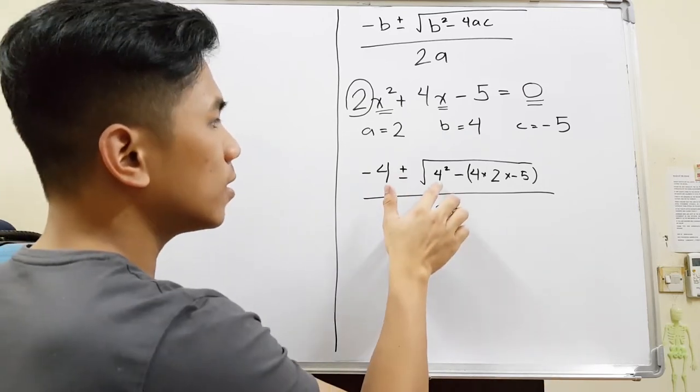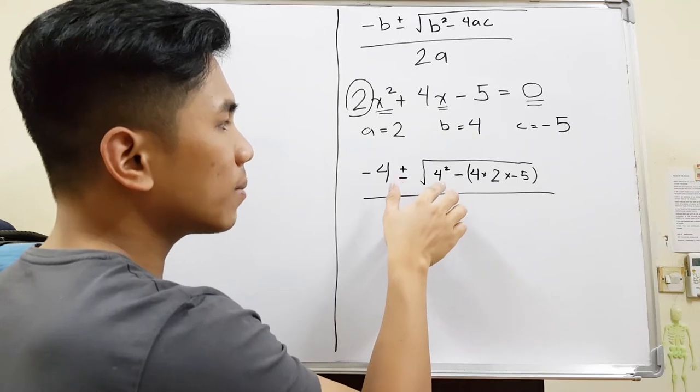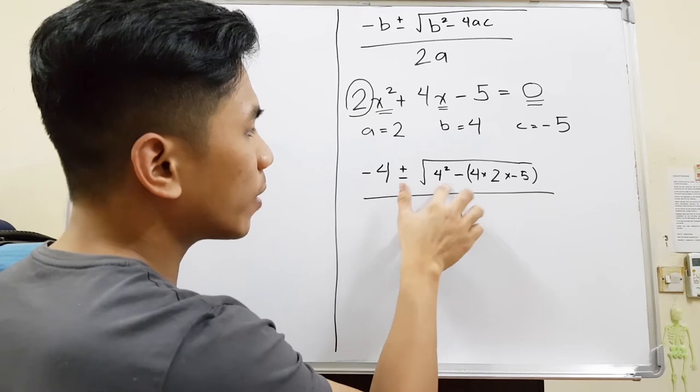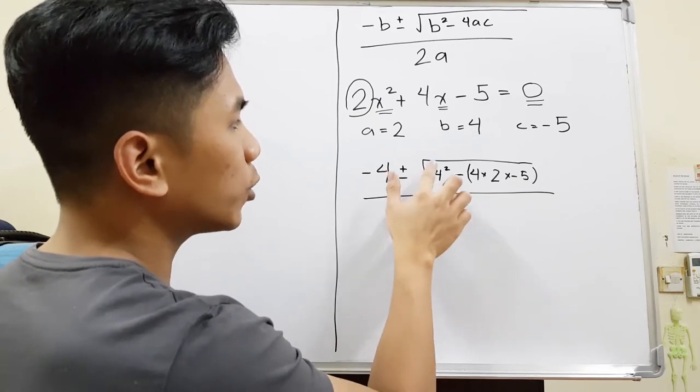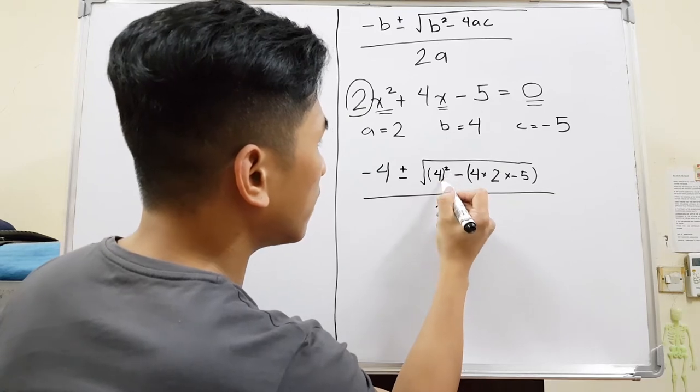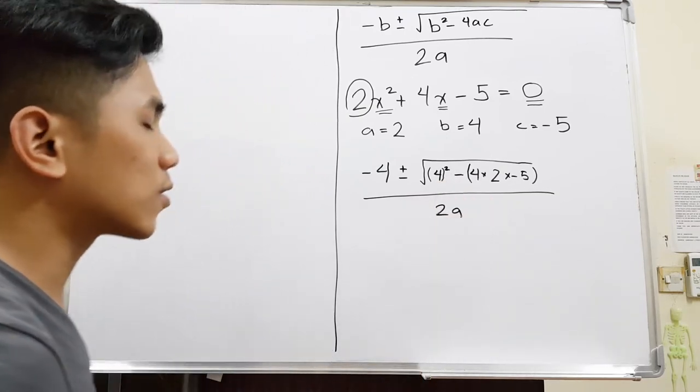Just take note that when you're squaring, on some calculators if you square a number, especially if it's negative, it will become negative. Just make sure that this part, if it's negative, put a parenthesis just like this, and then square outside in order for you to get the right answer.